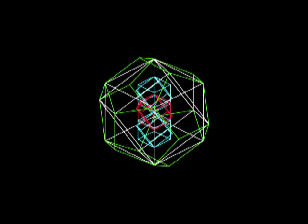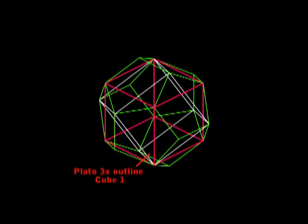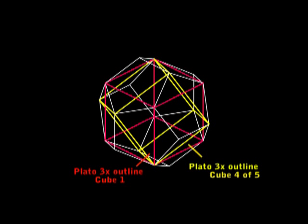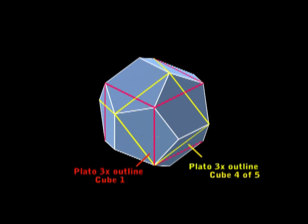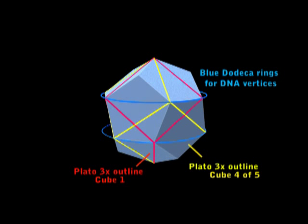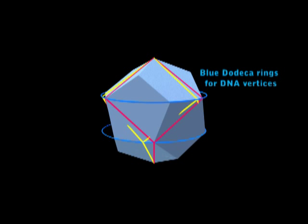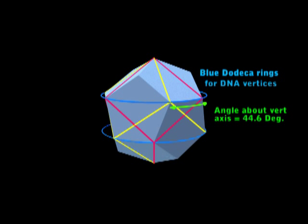Let's take a look. We'll make the original cube red and the other golden ratio one gold. We'll bring in a solid dodeca and we'll give it a couple of blue rings. Now I'll rotate the gold cube to show the 44.6 angle between the red cube.